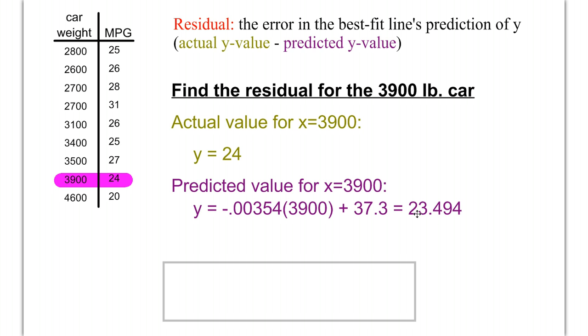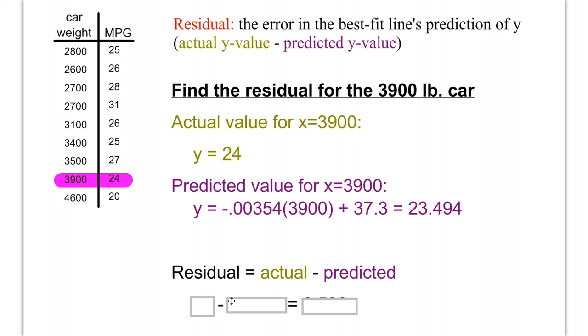So, we have 24 as our actual, our predicted is 23.494. The residual, then, in this case, is the actual minus the predicted. 24 minus 23.494, which is going to give us a positive residual of .506.